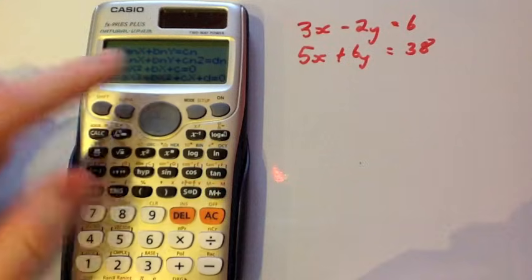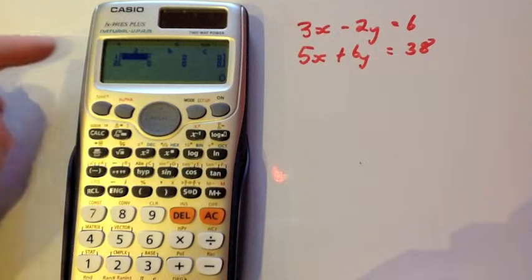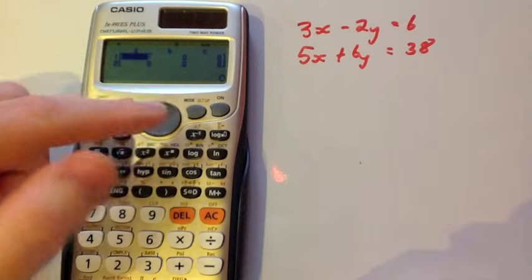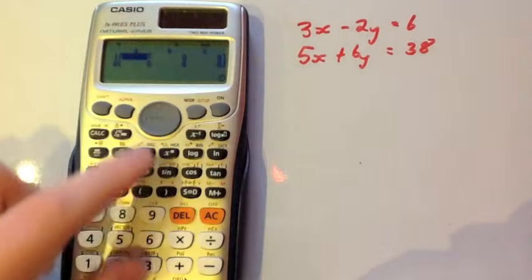If we press number one, it's going to prompt you for A, which is the number in front of X, B, which is the number in front of Y, and C, which is the number that it's equal to. Let's put in the numbers from the first equation. The coefficient of X is equal to 3.